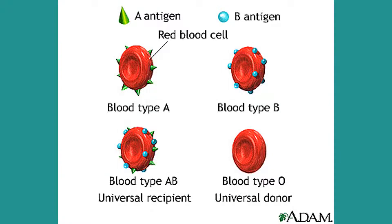People with type A blood have the antigen A on the surface of their red blood cells, while people with type B blood have the B antigen. Individuals with type AB blood have both A and B antigens, whereas people with type O blood have no antigens present. Take note that there is no such thing as antigen O.